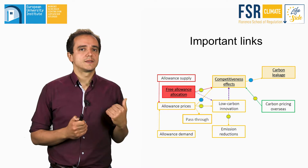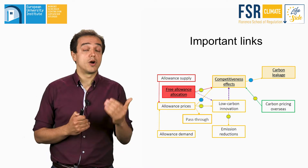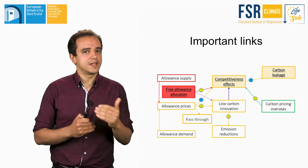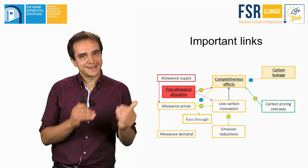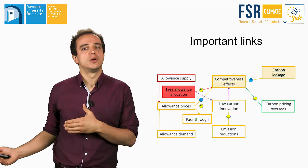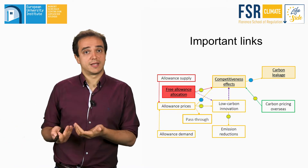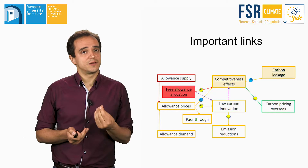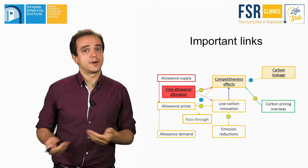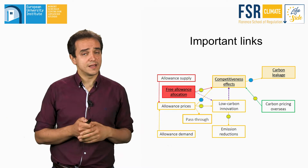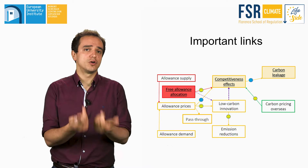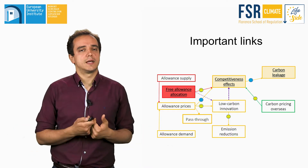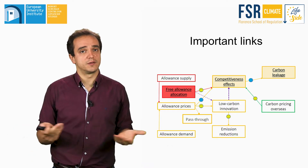Free allocation is a way of preventing competitive effects and therefore carbon leakage. In principle, free allowances should be given just enough to cover that part of carbon cost that cannot be passed through by firms without a negative effect on their market shares. In practice, it is very difficult to estimate with precision this ability of pass-through in different sectors. At the same time, handing over overly generous free allocations is problematic because it generates windfall profits that are difficult to justify.